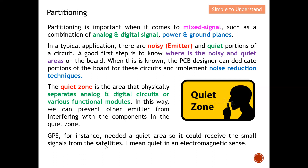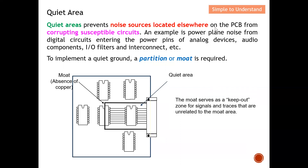For example, GPS needs a quiet area so it can receive the small signal from the satellite. The satellite is many kilometers away from Earth, and the signal that arrives from the satellite is very weak when it reaches Earth. So we need a quiet area to prevent any interference from upsetting the received signal. The quiet area prevents noise sources located elsewhere on the PCB from corrupting those very sensitive devices, ensuring noise sources are located outside the quiet area.